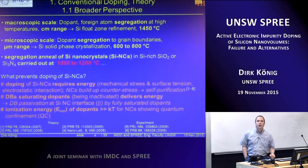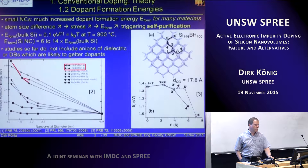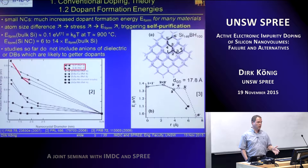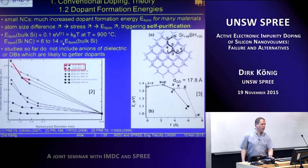Self-purification is a very general phenomenon. It occurs for many materials because you have different atomic sizes when fitting a foreign atom into a lattice. Also, stress by electrostatics from an additional carrier raises the formation energy and triggers self-purification. The formation energy in silicon nanocrystals is about an order of magnitude higher compared to bulk silicon. In bulk silicon it's around 0.1 eV, so at around 900 degrees Celsius you can activate your dopants in the silicon lattice.